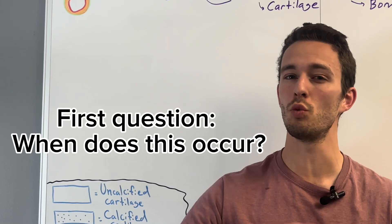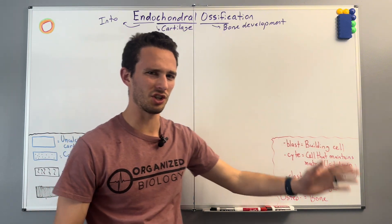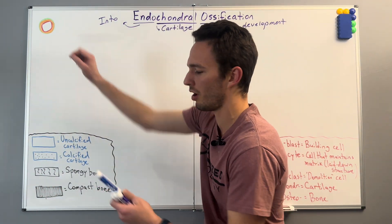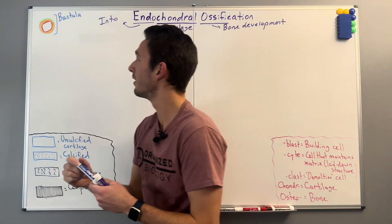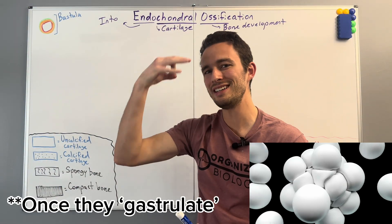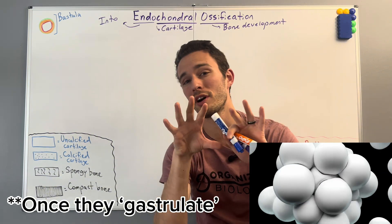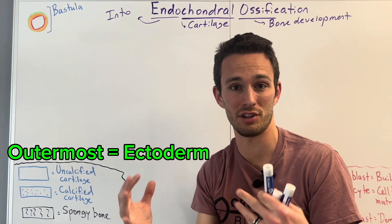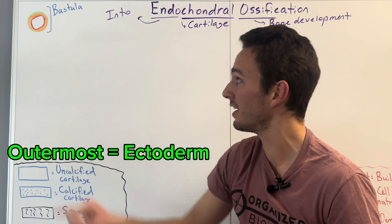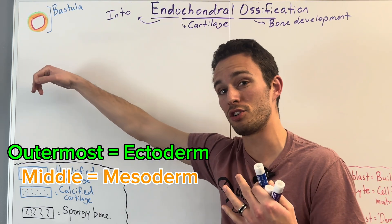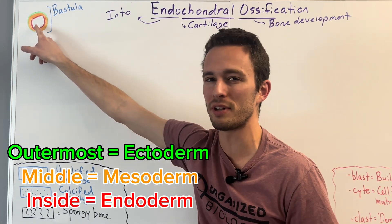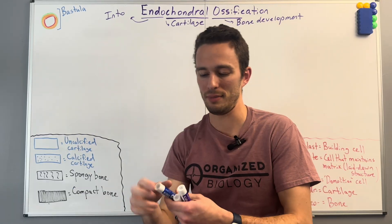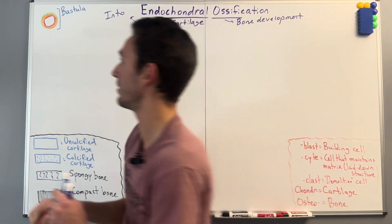The first question is: when does endochondral ossification start? Well, it actually starts when you are an embryo. I've drawn something called a blastula, which is basically a ball of cells that have three distinct parts when you are an embryo in your mother's womb. We've got the outermost part in green — that's the ectoderm, going to form basically your nervous system and your skin. Then we've got the mesoderm, which is going to form most of your internal organs and bones. And then we've got the endoderm, forming basically that tube of your gut. But we're focusing on the mesoderm.